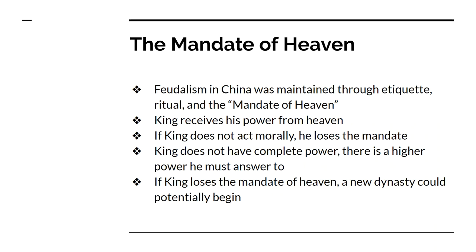Another very important part of the Zhou dynasty is the mandate of heaven. It's this whole ritual of etiquette and customs where it's believed the king receives his power from heaven, from the supreme being. This gives the king someone he has to look up to and makes it so the king has to act morally. If the king is not a good, just king, he can lose his power — he can lose the mandate. And if a king loses the mandate, very often a new dynasty would come into power. In reality, a lot of dynasties used this mandate of heaven idea as a way to justify their taking over for somebody else. So the Zhou would say that the Shang lost the mandate of heaven, and that's why the Shang were defeated by the Zhou.